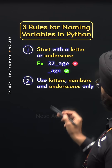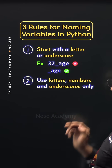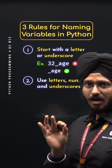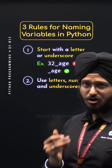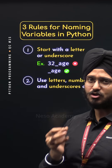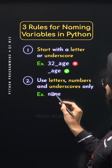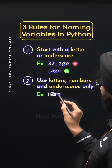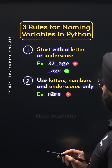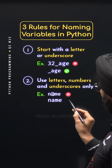Rule number two: use letters, numbers, and underscores only. Always use letters, numbers, and underscores while naming your variables. Don't use special characters. For example, here we are using the special character '@' while naming our variable, which is not allowed. But this variable name is allowed.